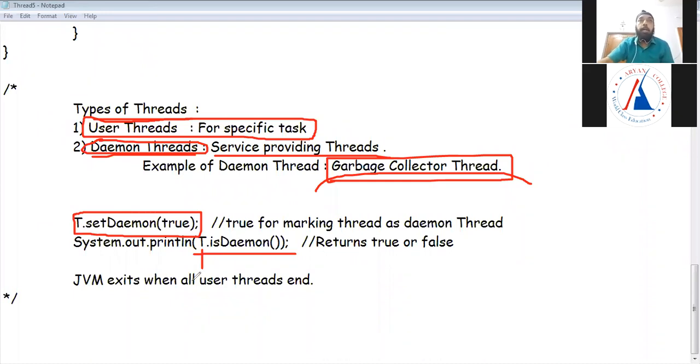You have 8 user threads and 2 Daemon Threads, so there are 10 threads. When all your user threads end, 8 user threads and 2 Daemon Threads, so when these 8 user threads end, then JVM exits. JVM will end and will not wait for the Daemon Threads to end because these 2 threads are for service provide.